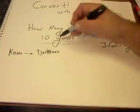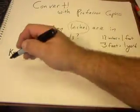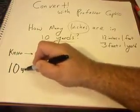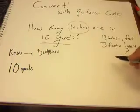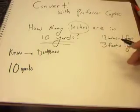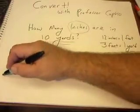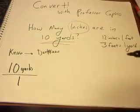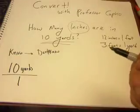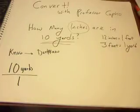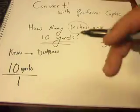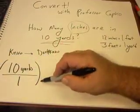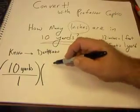So we're going to start with what we know — we have 10 yards. I'm going to write that down: 10 yards, and I'm going to put that over 1, because anything over 1 is itself. It's not required, but it'll help keep everything lined up. So I've got 10 yards over 1, and I want to multiply by my conversion factors.